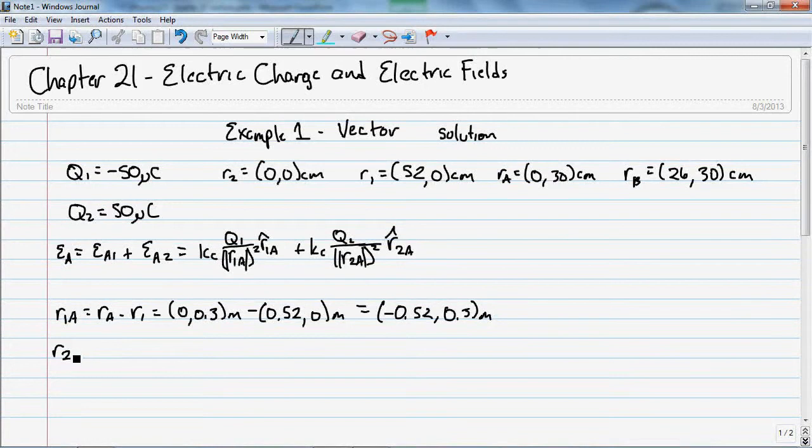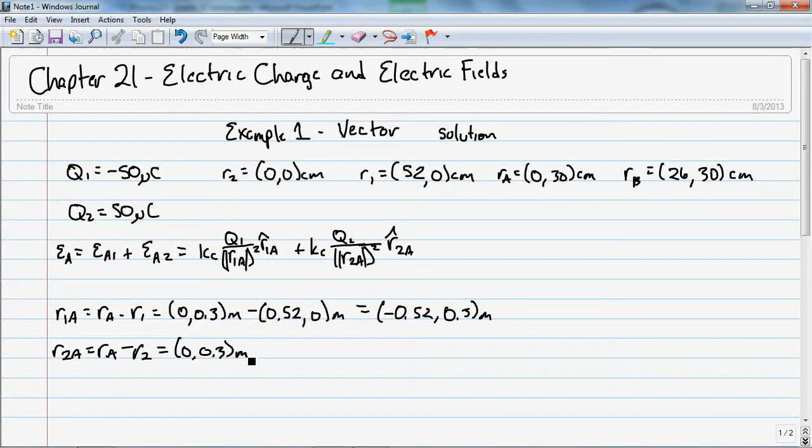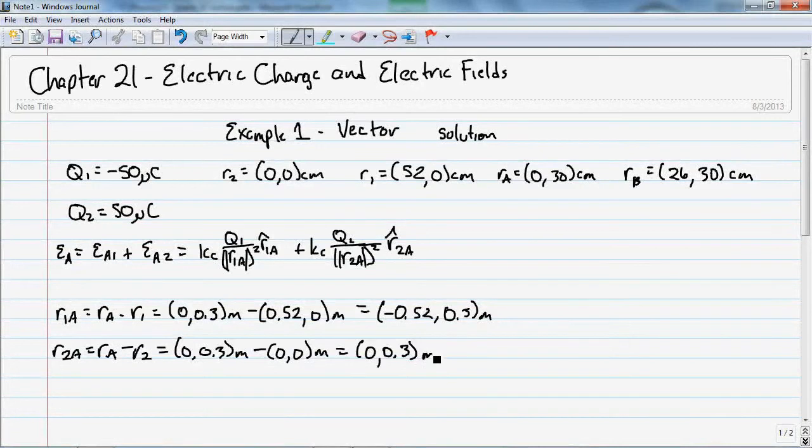And R2A is going to be R-A minus R2. 0, 0, 0.0. And that just leaves me with 0, 0.3 meters.